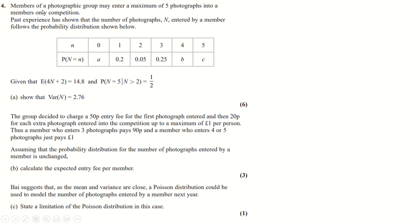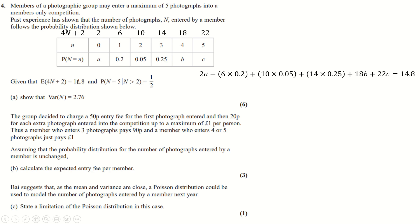Question four concerns a photography competition. Entries range from 0 to 5 photos with probabilities involving unknowns a, b, c. The expected value of 4N + 2 is given as 14.8. We compute 4(0)+2=2, 4(1)+2=6, and so on, then set up E[4N+2] = 2a + 6(0.2) + 10b + ... = 14.8. The probabilities must sum to 1, giving a second equation.